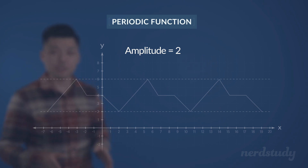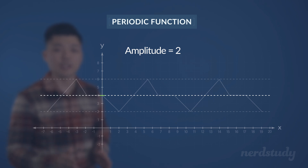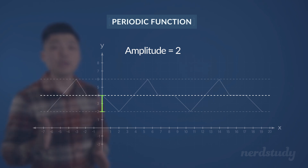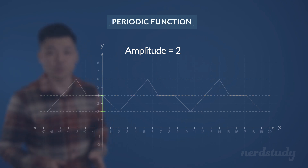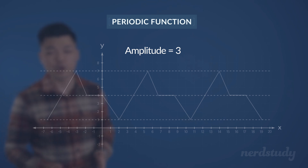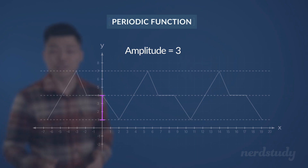The amplitude is the distance between the midpoint of the height up to the maximum or the minimum of a periodic function. Therefore, a periodic function with a larger amplitude will consequently imply that the height between the maximum and minimum points is larger as well.